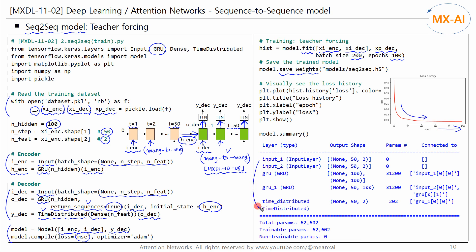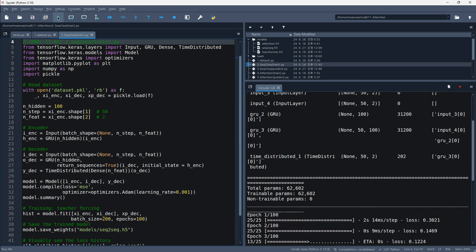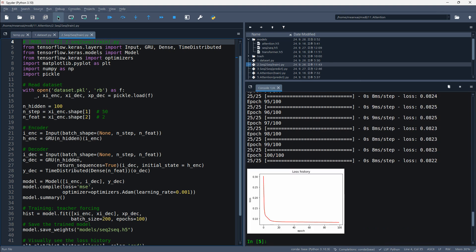The model summary is as follows. The final outputs of this model are the outputs of each time step of the decoder — 50 is the number of time steps in the decoder, and 2 is the number of target features. This is how we train a sequence-to-sequence model; it's relatively simple because we use the teacher-forcing method. Let's run this code — the training is complete and the trained parameters are stored in the file.